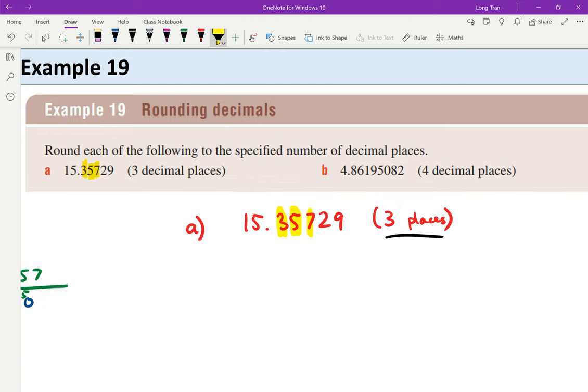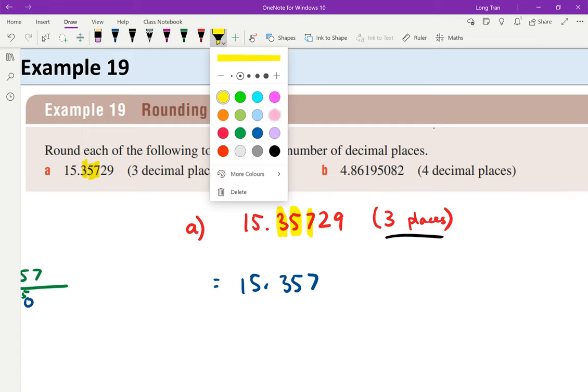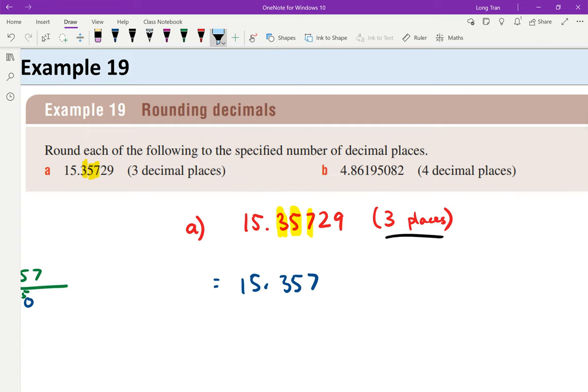Normally, most students will write 15.357 because that's three decimal places. But there's one rule for rounding: we always check the next number. If we want three decimal places, we check the fourth number. If we want two, we check the third. What you're checking for is whether that next number is five or more - if so, you must round up.